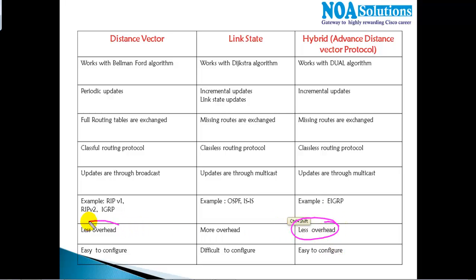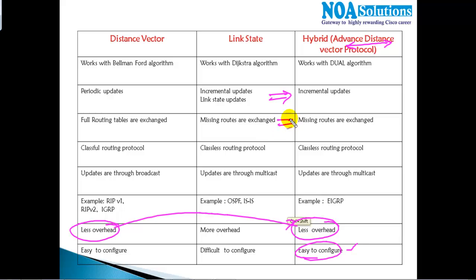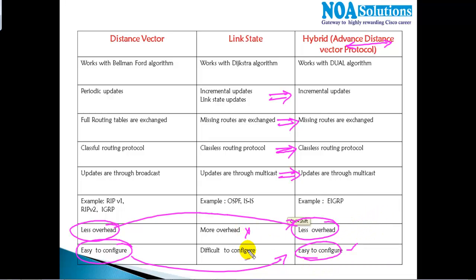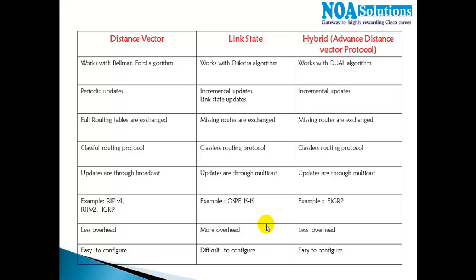Cisco modified EIGRP to combine the best features of both protocol types with less overhead and easier configuration. As a hybrid or advanced distance vector protocol, EIGRP uses incremental updates, exchanges only missing routes, is a classless protocol, uses multicast for updates, and is easier to configure with less overhead compared to pure link state protocols.